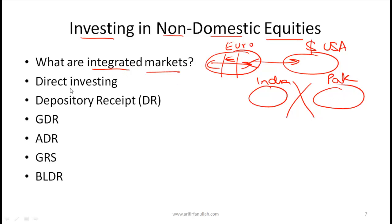Another term you should know is direct investing. Direct investing is where an investor directly purchases shares in another country. For example, if Goldman Sachs directly buys shares of Japanese airlines on the Tokyo Stock Exchange, that is direct investing. This is not easily available to all investors — direct investing generally works for institutional investors across reasonably well integrated markets.